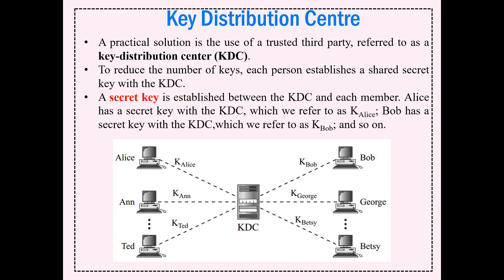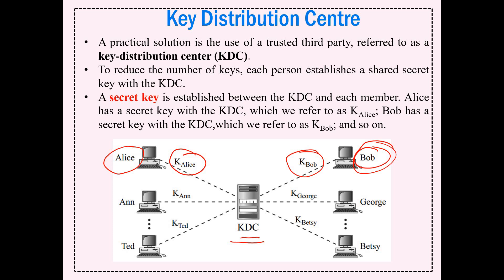Let us see what exactly is meant by key distribution center. Usually, for any scenario where cryptographic keys need to be distributed - for example, Alice wants to communicate with Bob - the procedure is that Alice will make a request to a nodal point called KDC or the key distribution center, sometimes called a session key. The KDC will first authenticate Alice's credentials and find some kind of a private or secret key for the intended transmitter.